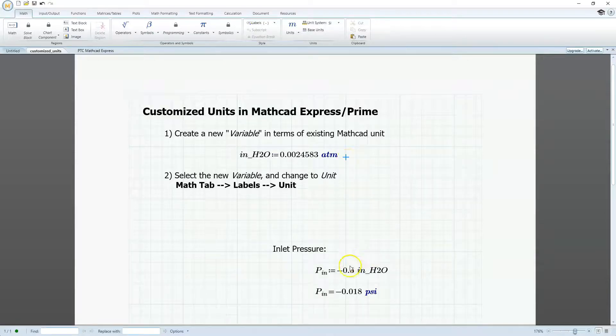And at first, we may think that we have actually solved our problem. We see that we have our inlet pressure of negative 0.5 inches of water, which is negative 0.018 psi. However, if we want to convert this to inches of water, we can see that it doesn't recognize this as a unit.